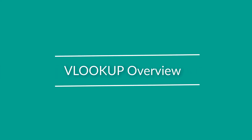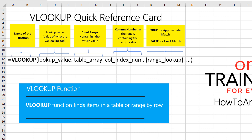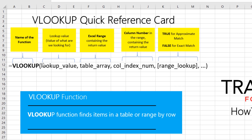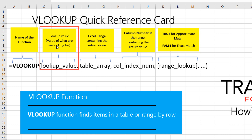The VLOOKUP function helps you find items in a table or range by row. It has four parameters. Three of those parameters are mandatory, and the fourth one is optional. VLOOKUP accepts a lookup value, which is the value of what you're looking for. As a second parameter, VLOOKUP accepts an Excel range.